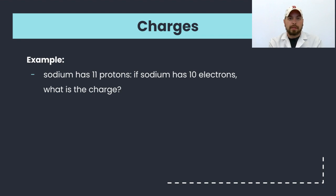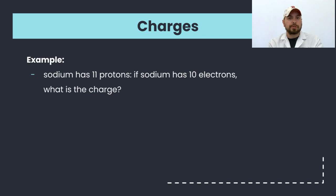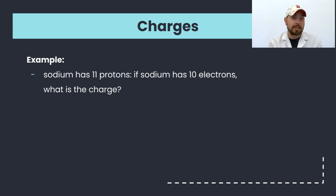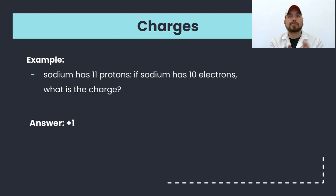For example, if I have a sodium atom — sodium has 11 protons; it's number 11 on the periodic table. If that sodium atom were to have 10 electrons, what would its charge be? Well, it has 11 protons each with a plus one charge, and 10 electrons each with a minus one charge, so its total charge is going to be plus one.